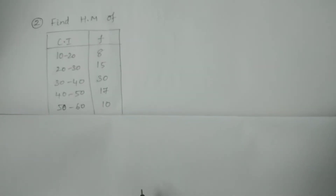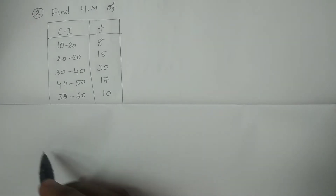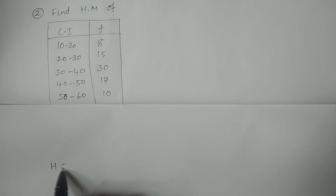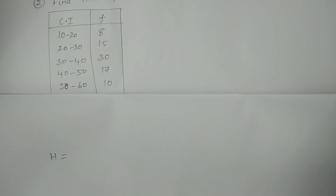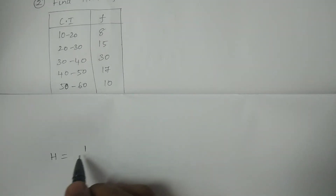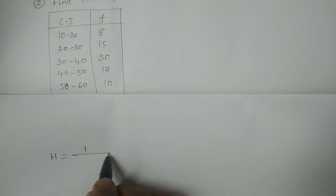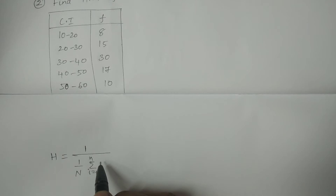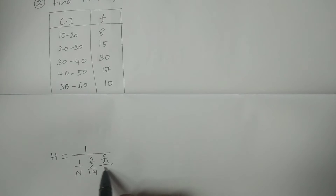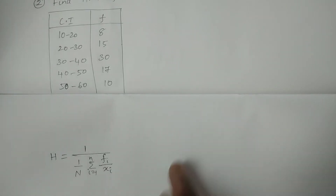What is the formula? The harmonic mean H for grouped data is calculated as: H = 1 / (1/N × Σ(i=1 to n) fi/xi), again the reciprocal of the arithmetic mean of reciprocals, where fi is the frequency and xi is the midpoint.